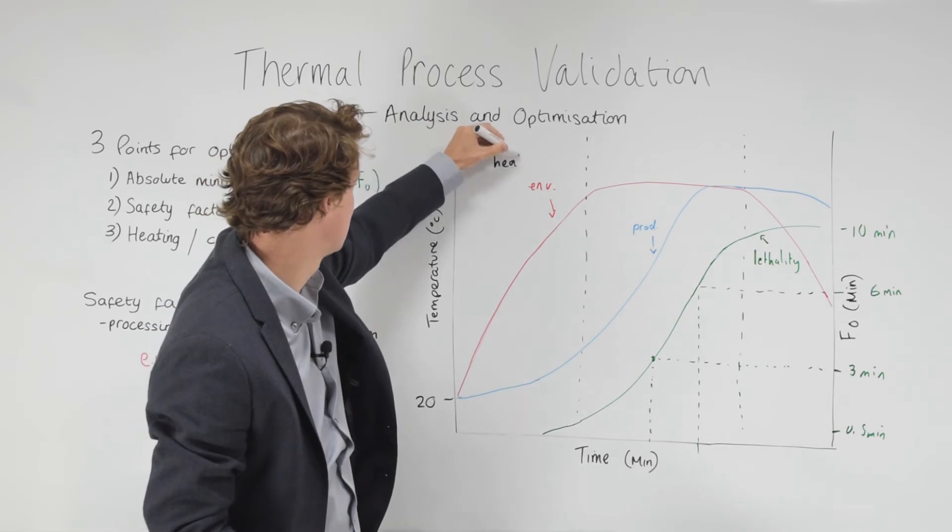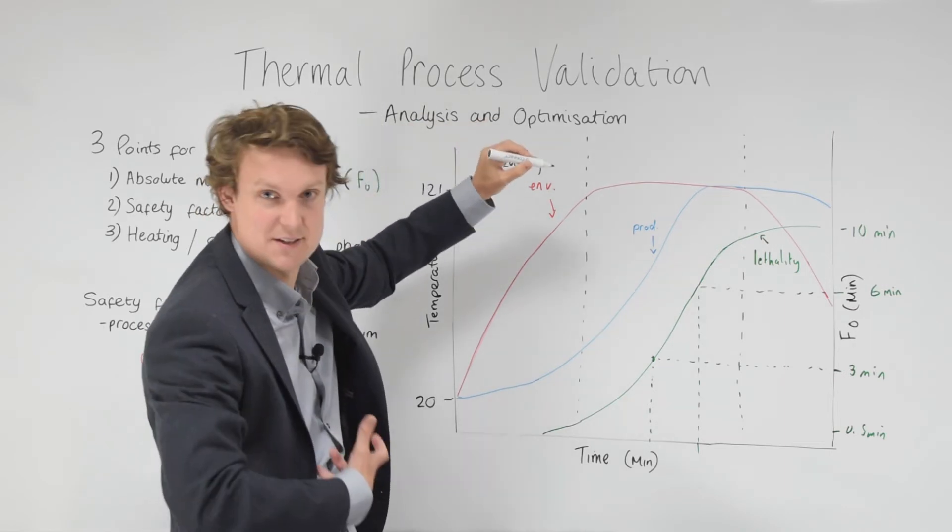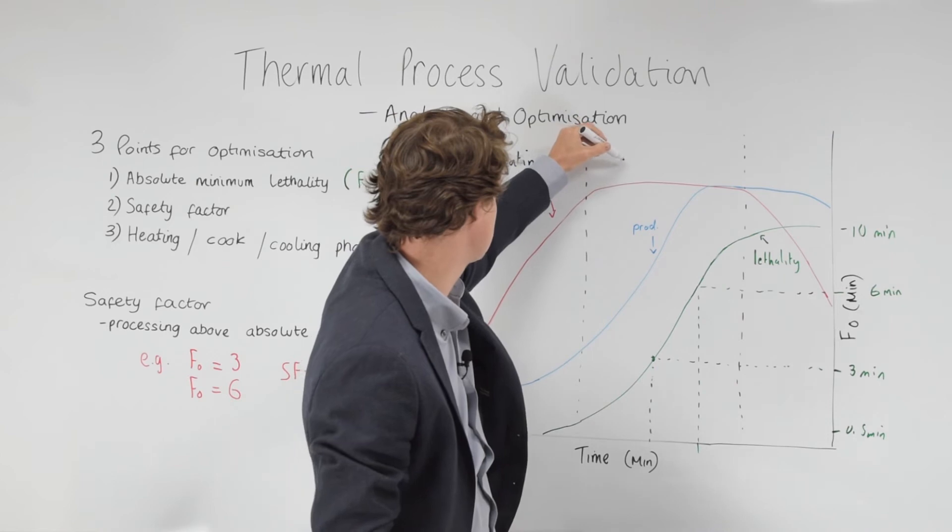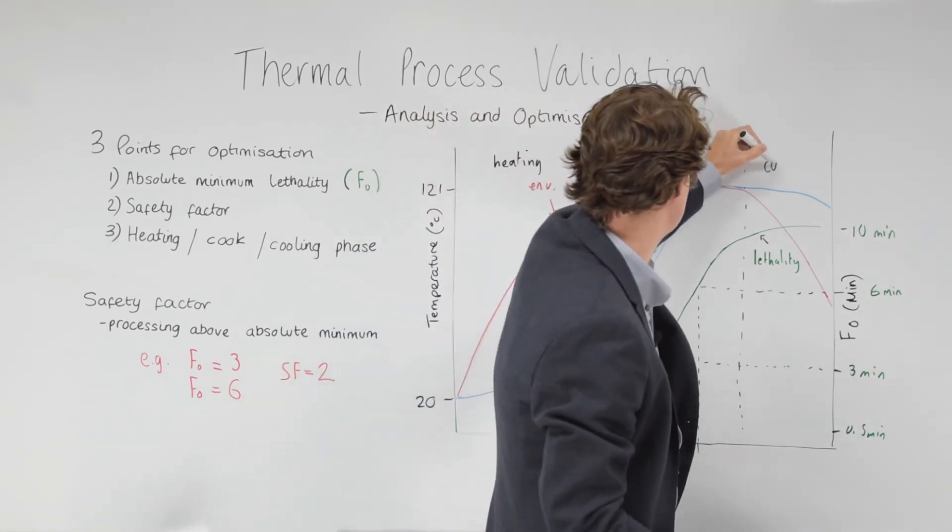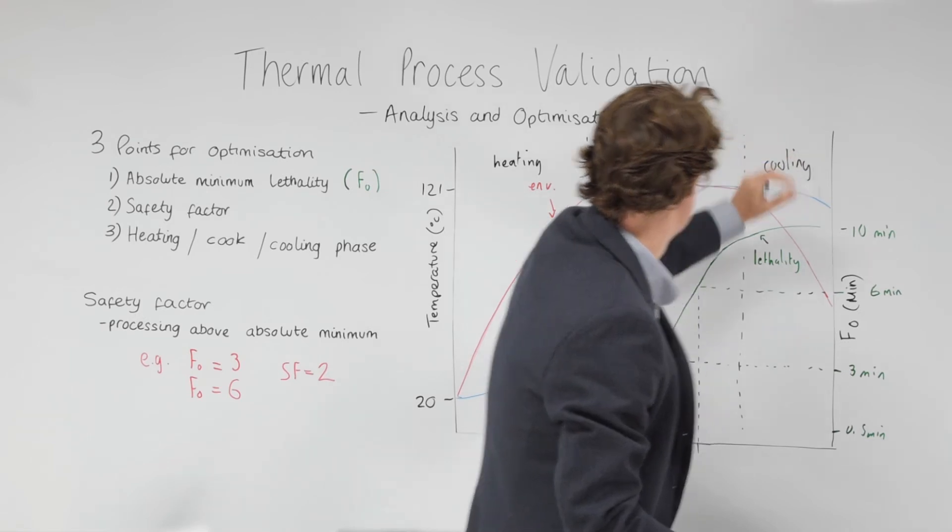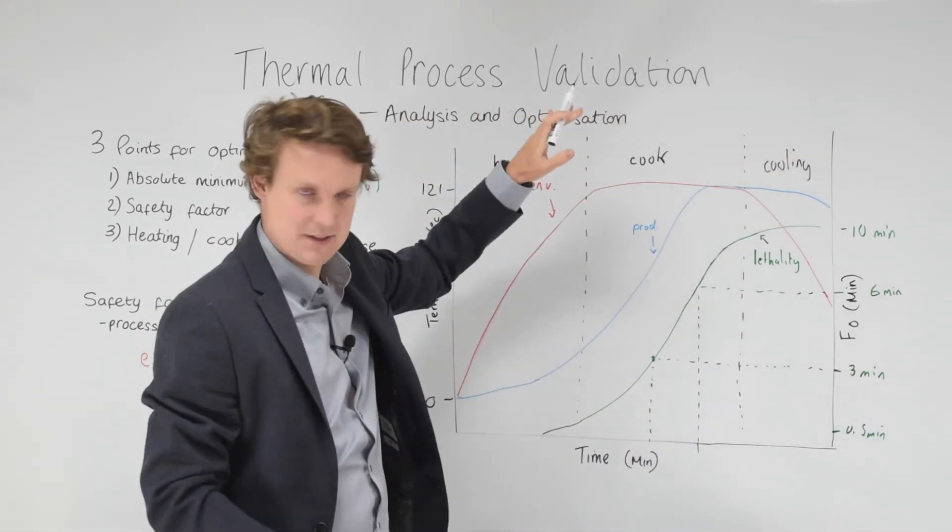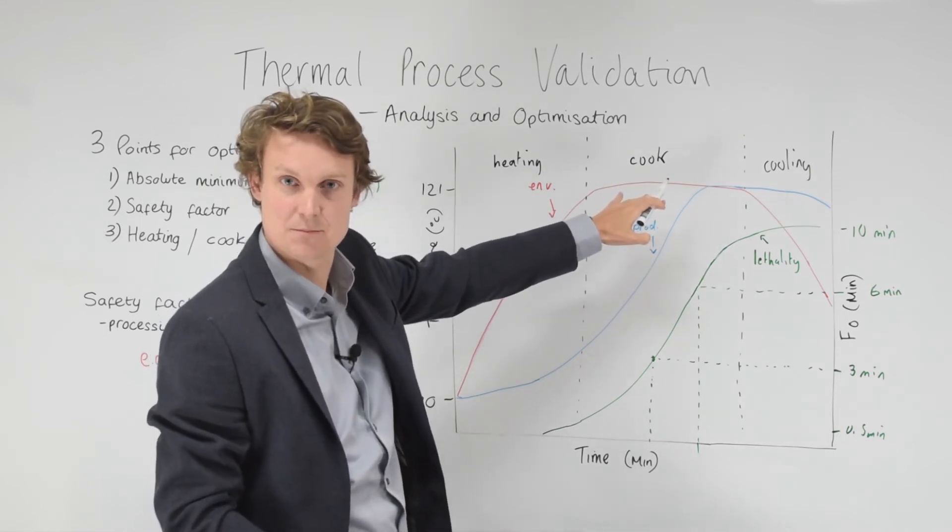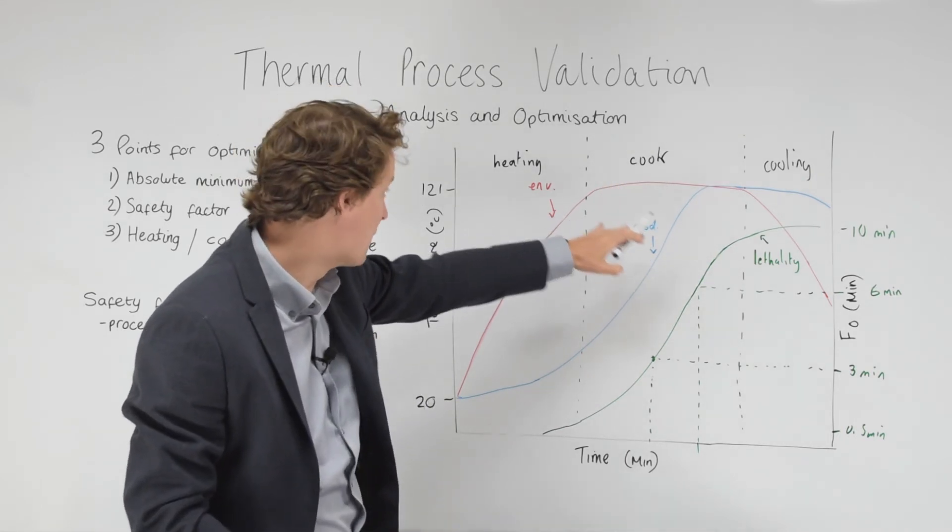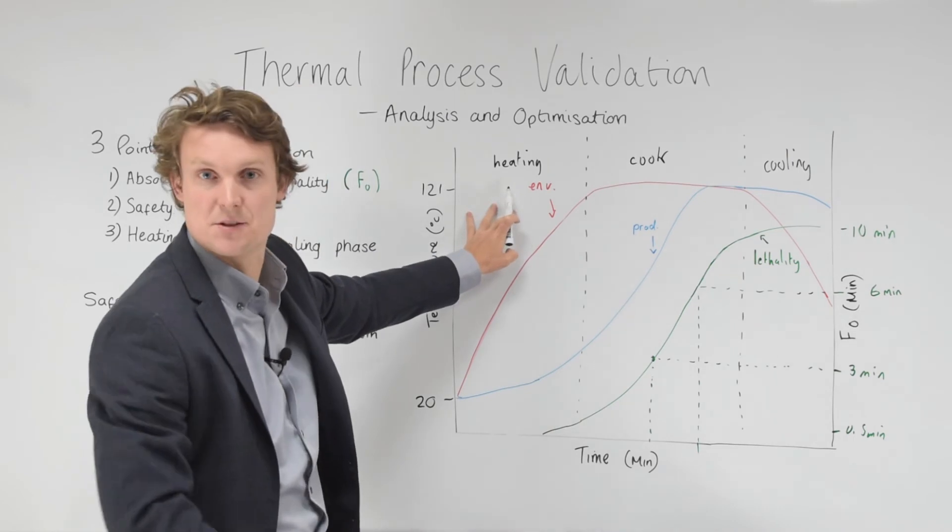We'd have the heating, and there might be more than this in some instances, but in this simplistic case, heating, the cook phase, and the cooling phase. The question is, we're going to have to use something, so we'll use the cook phase of course. That is typically the most controlled part of the program. Maybe we'd use the heating phase because that can also be quite controlled.